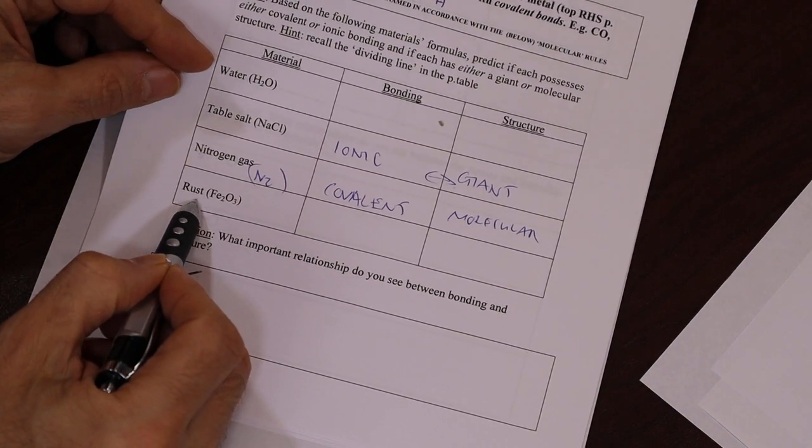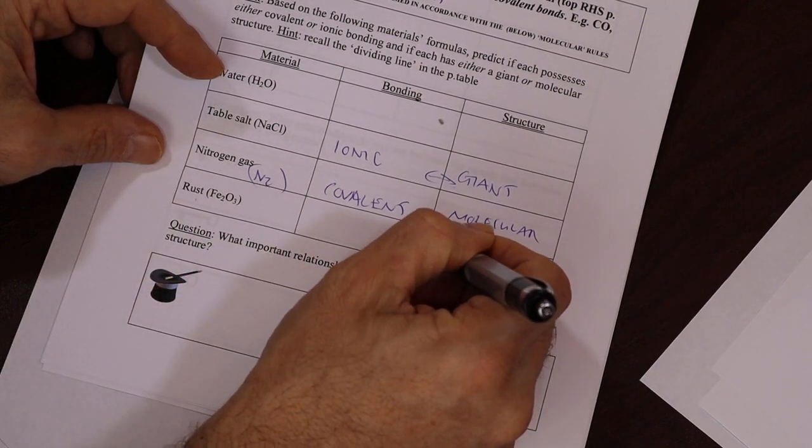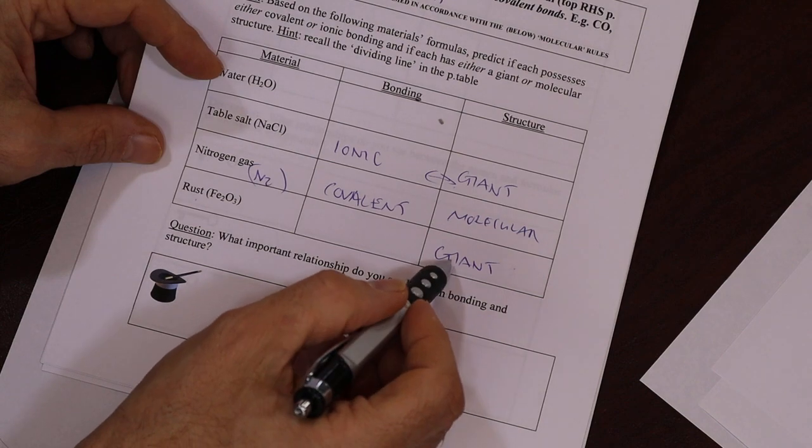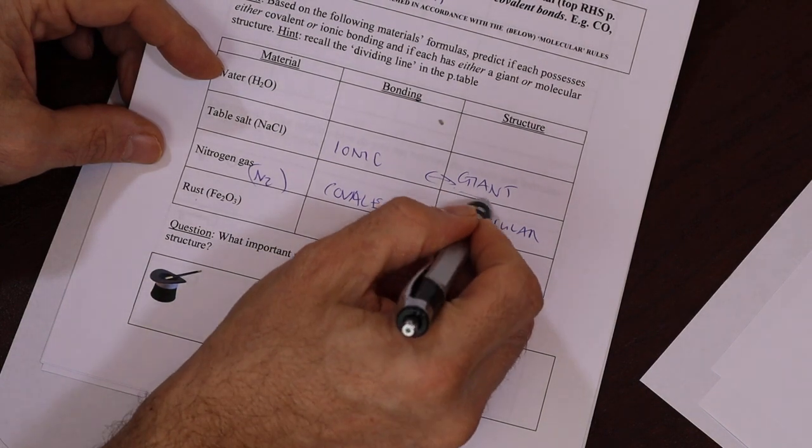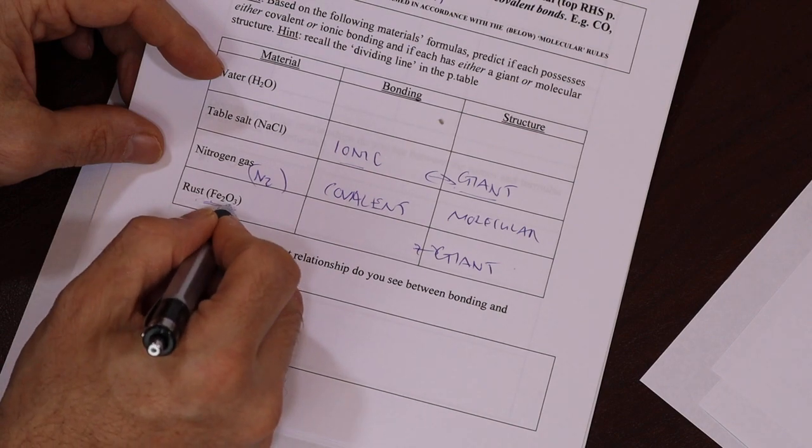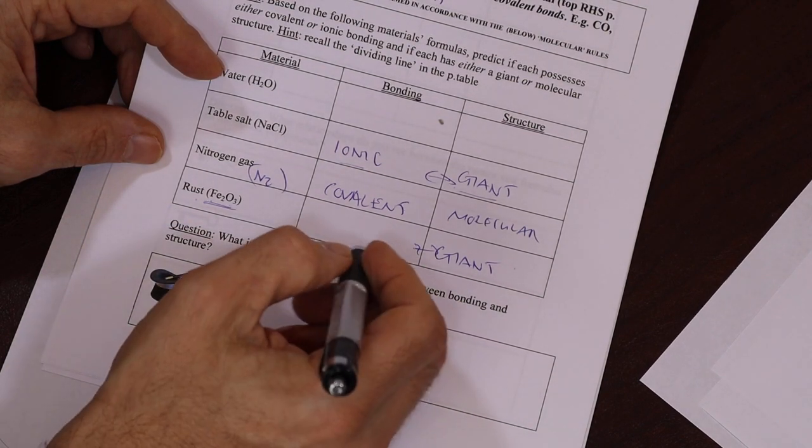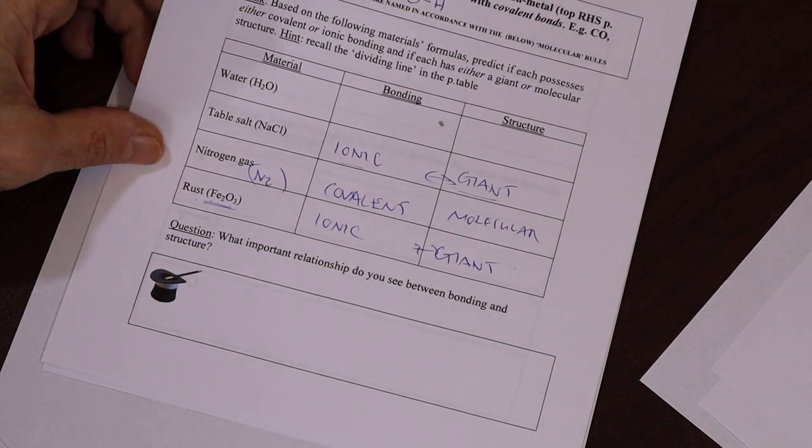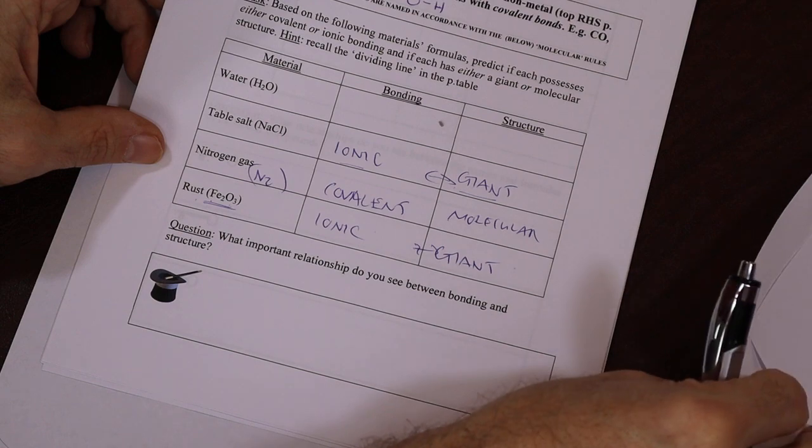Okay, now rust, my car door, right? So my car door is a giant structure, okay? Last time I looked, it's big, right? So we can kind of make an assumption here: giant or ionic. And that makes sense because it's iron and oxide. Iron oxide is rust, which makes it ionic: metal and non-metal.